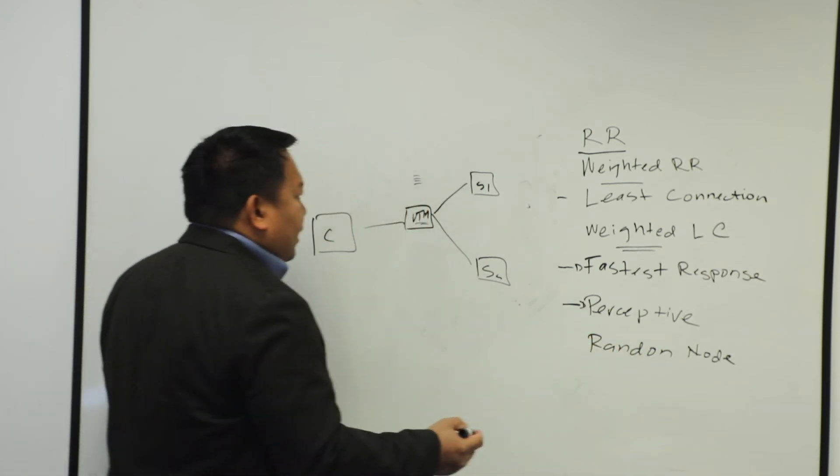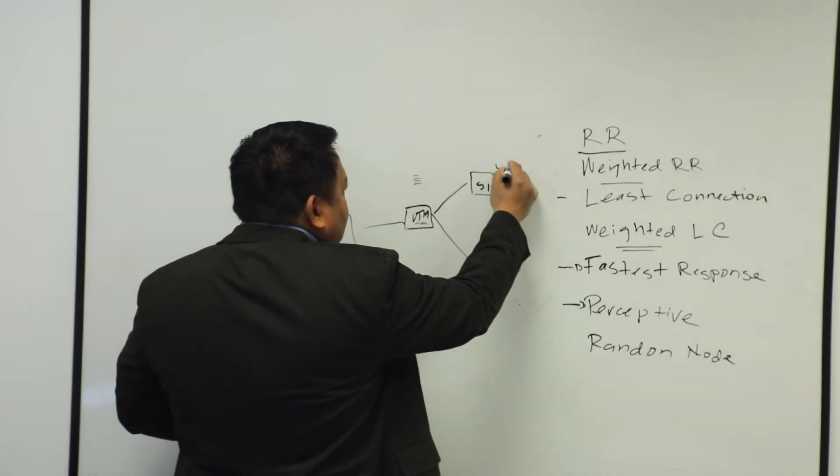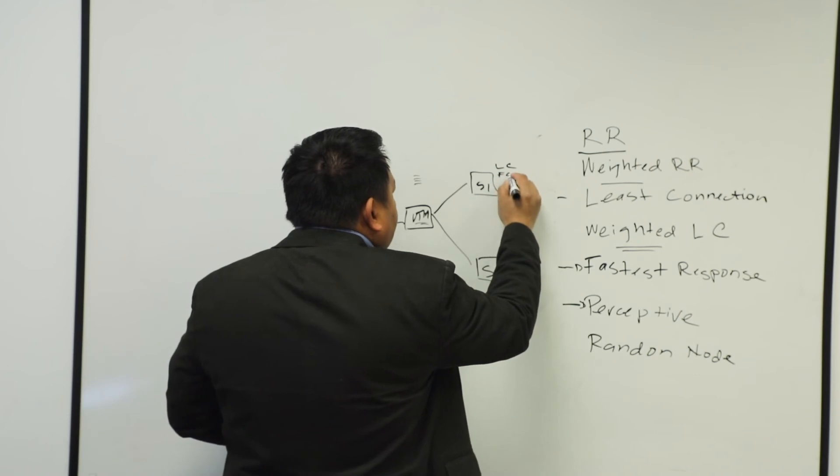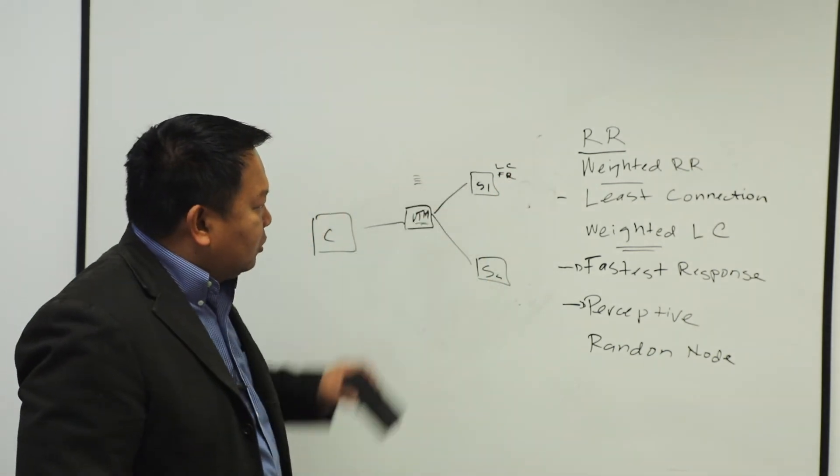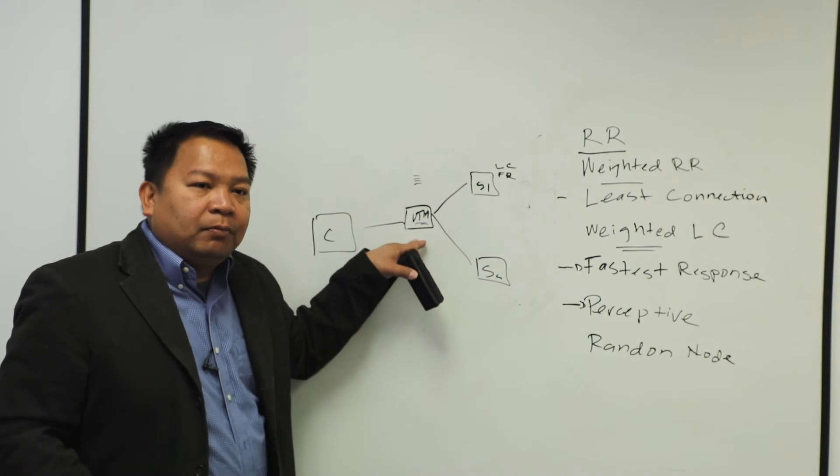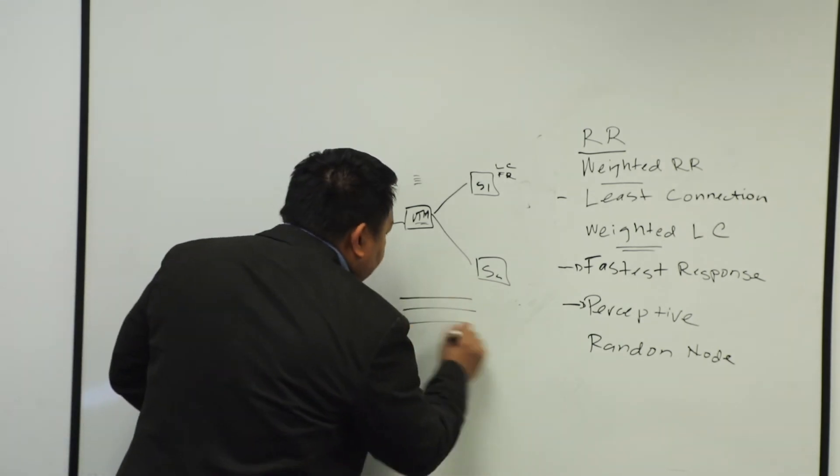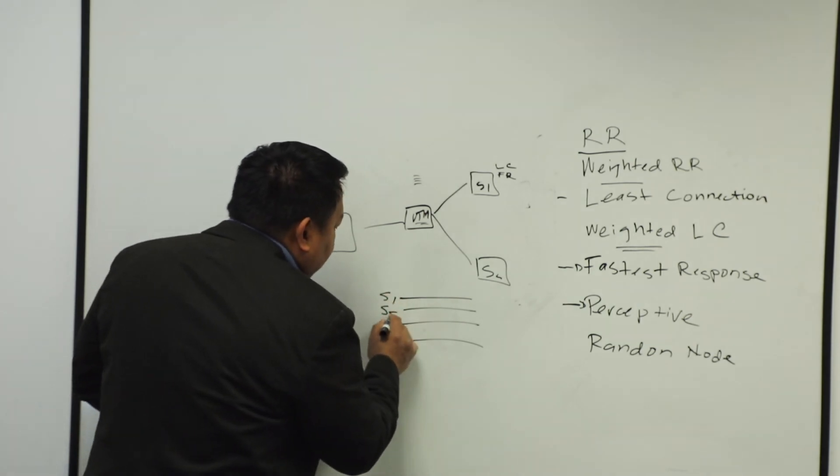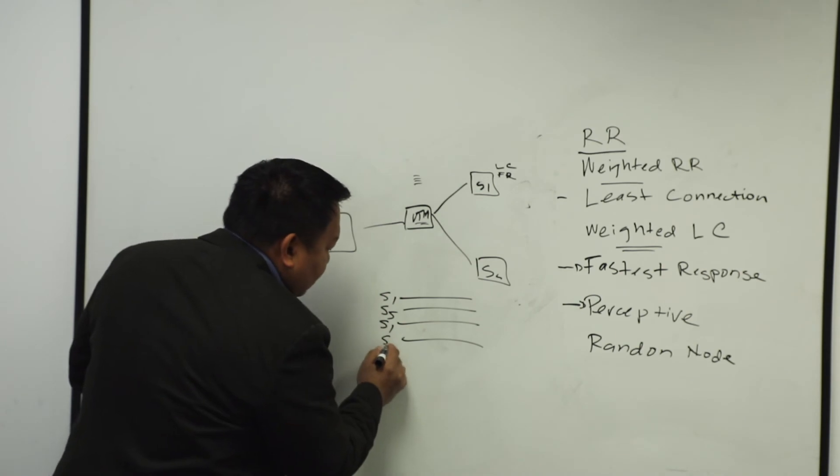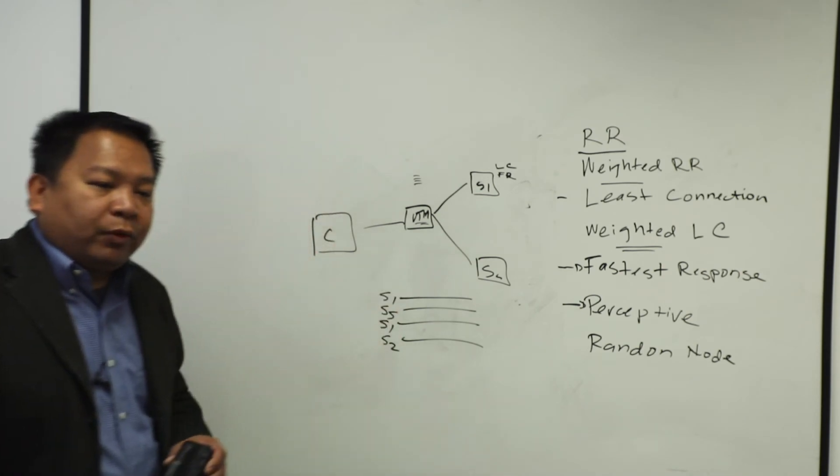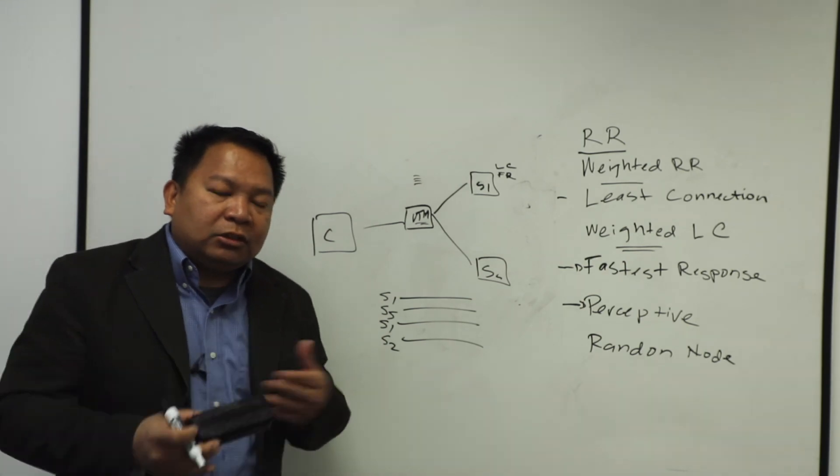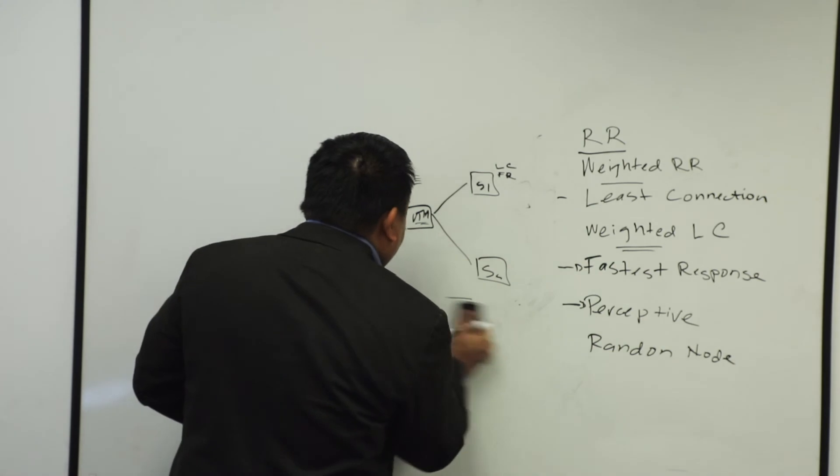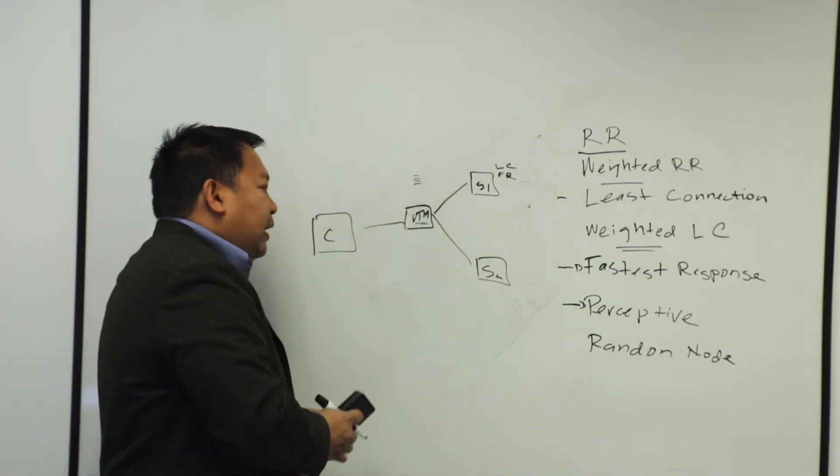With the perceptive, again, it checks for least connection, it considers that, and then it checks for the fastest response, and based on those information, it goes back to VTM, and it will come up with a list of should I go to, if you have multiple servers, Server 1, no, let's go to Server 5, Server 1 again, Server 2. So it will create that algorithm until it reaches a threshold, and then it recalculates again. This is your perceptive load balancing algorithm.